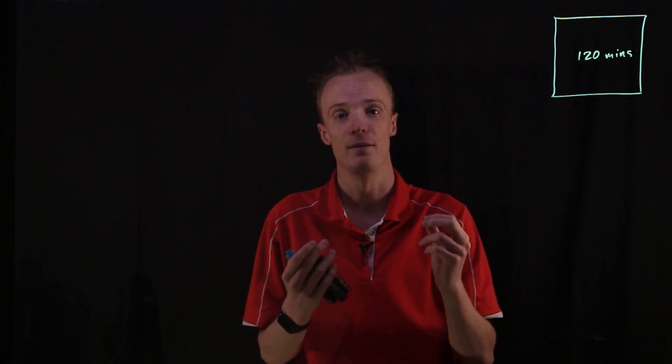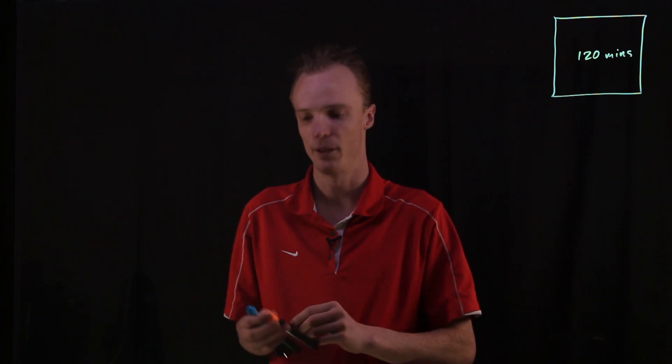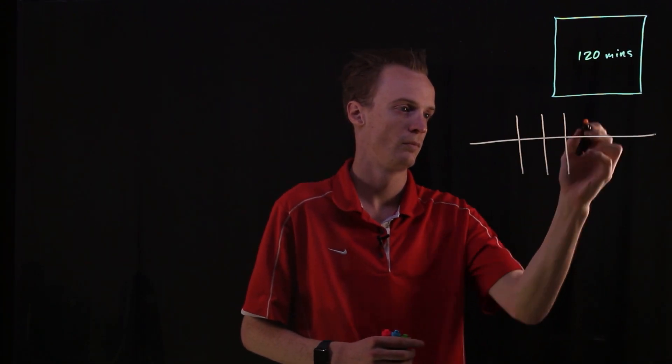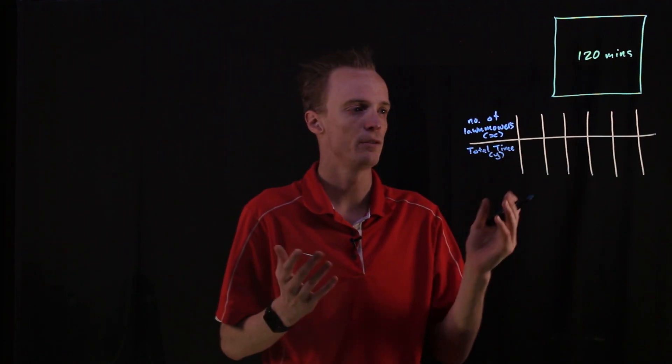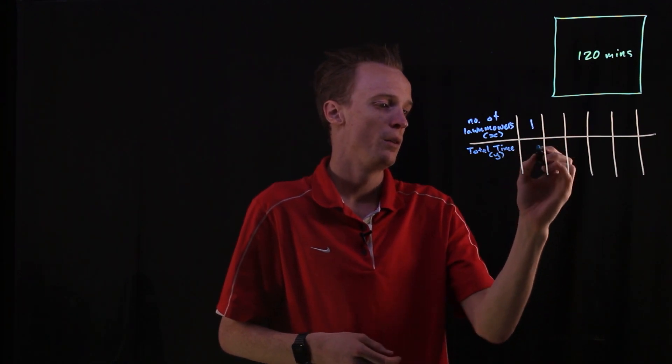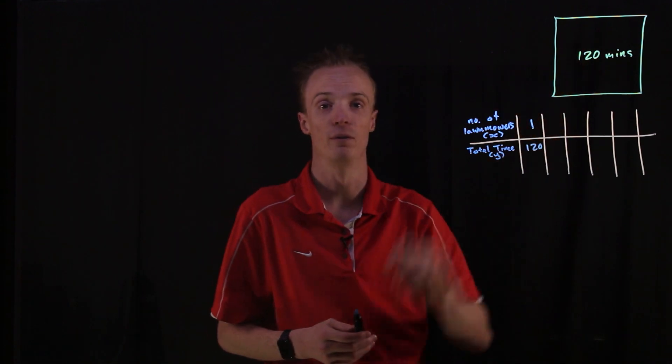So the time is our dependent variable, and also known as our y variable. So let's create a table of values. Now, in this relationship, we know that one lawnmower will take us 120 minutes to be able to mow this block of land.